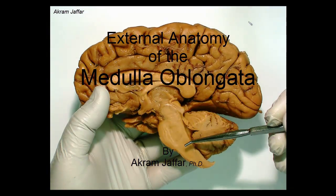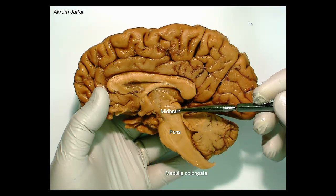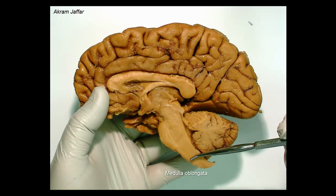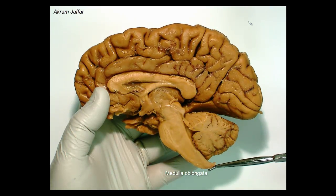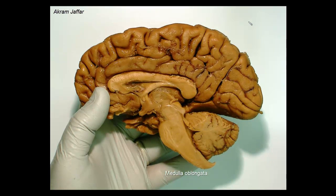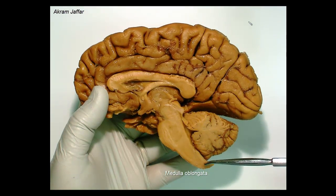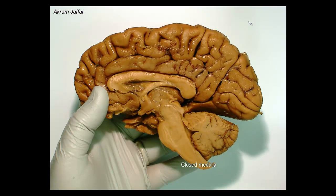The brainstem consists of the medulla oblongata, the pons, and the midbrain. The medulla oblongata is the lower part of the brainstem and is continuous downwards through the foramen magnum, continuing with the spinal cord. The medulla oblongata has a lower part which is called the closed part of the medulla. It is a continuation of the spinal cord and contains a central canal that is the continuation of the central canal of the spinal cord.